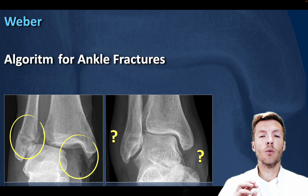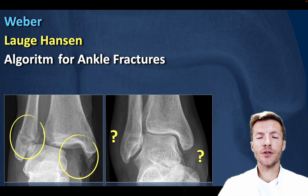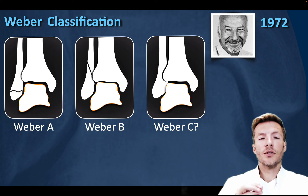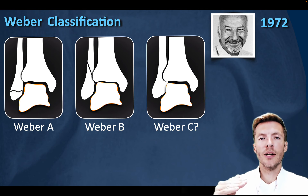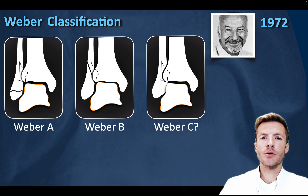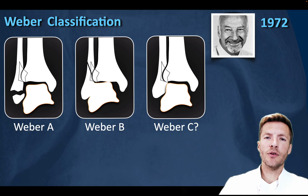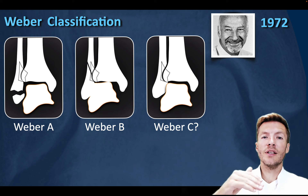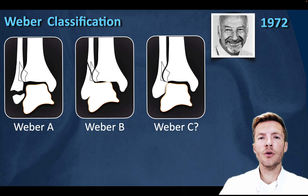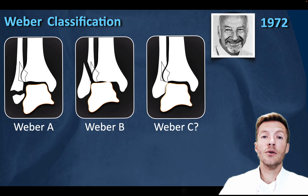First we need to know about the Weber classification and the Lauge-Hansen classification. Once we know this, we can properly assess the algorithm. The Weber classification looks at the fibular fracture compared to the level of the syndesmosis. A Weber A fracture is below the level of the syndesmosis, a Weber B fracture is at the level of the syndesmosis with involvement of the syndesmosis, and a Weber C fracture is above the level of the syndesmosis. It gets more difficult when the fracture is above the field of view of your x-rays, because then you cannot see the fracture.